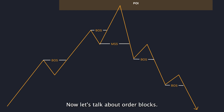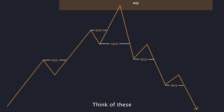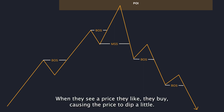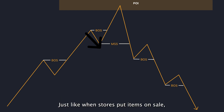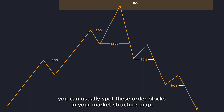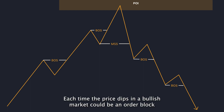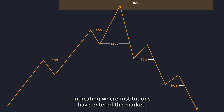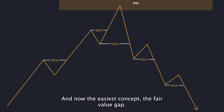Now let's talk about order blocks. Think of these as the shopping sprees of big traders, known as institutional traders. When they see a price they like, they buy, causing the price to dip a little, just like when stores put items on sale. You can usually spot these order blocks in your market structure map. Each time the price dips in a bullish market, it could be an order block, indicating where institutions have entered the market.